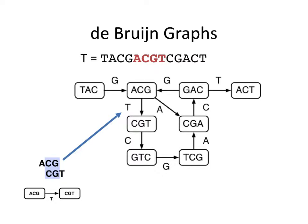De Bruijn graphs are the foundation of our structure. They are constructed from all the K-length substrings, known as K-mers, from a longer string. We'll use T in this example. For the length-4 substring shown in red, we take the K-1 prefix and K-1 suffix, shown overlapping in the lower left as vertices. We add an edge connecting them, which represents the full K-mer. Edges are shown with the letter shifted into the origin label from the right to form the destination label.